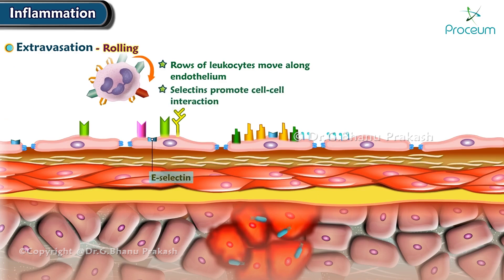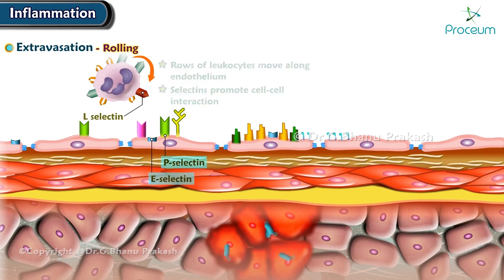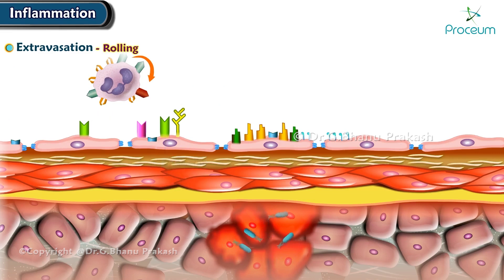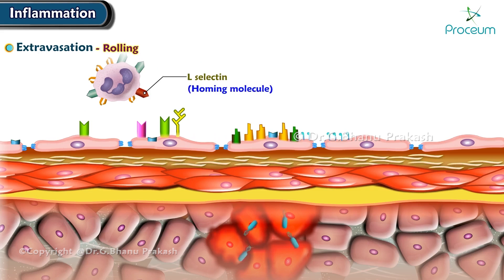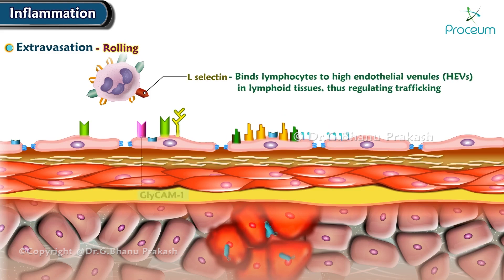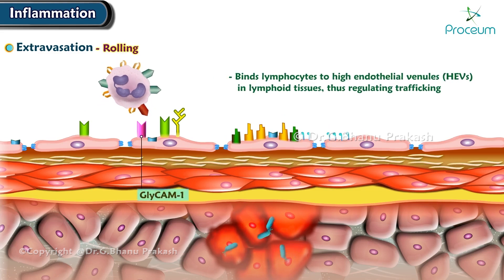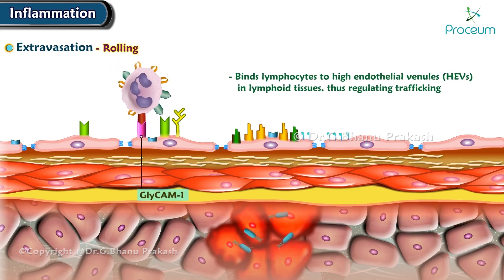There are selectins that promote cell-to-cell interaction during rolling. L-selectin is a homing molecule found on many types of leukocytes. It binds lymphocytes to high endothelial venules, or HEVs, in lymphoid tissues, thus regulating trafficking.